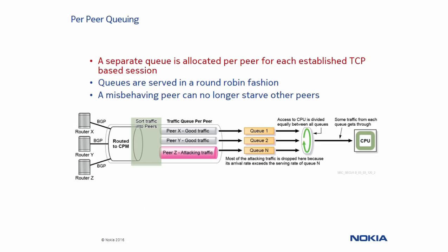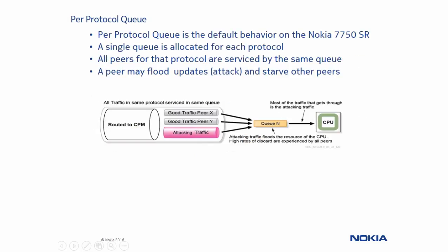As we can see from the diagram, a router is attacking a Nokia 7750 service router with the BGP protocol using frequent updates. Traffic is sorted per-peer and allocated its own queue. The queue is then served in a round-robin format, therefore one queue will not starve out other queues. The per-protocol queue is default enabled on the Nokia 7750 service router. A single queue is allocated for each protocol, and control plane traffic received for that protocol from all peers is served by that queue before reaching the CPU.